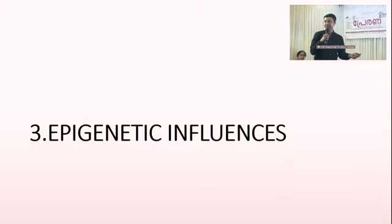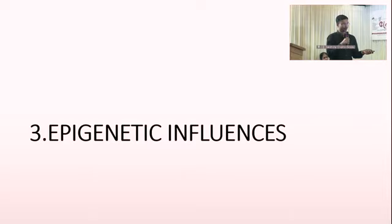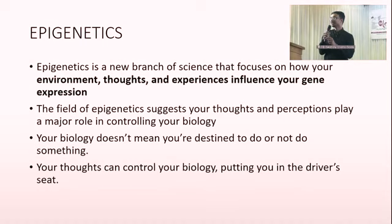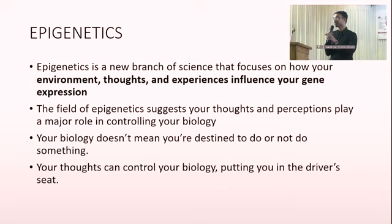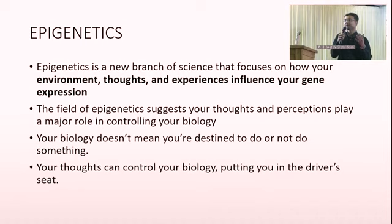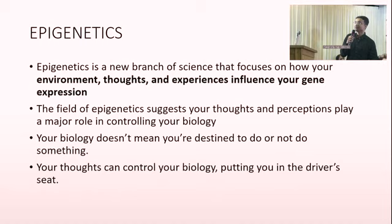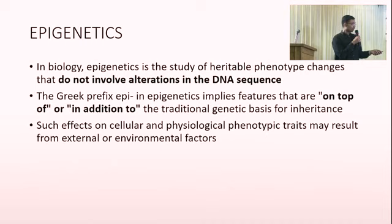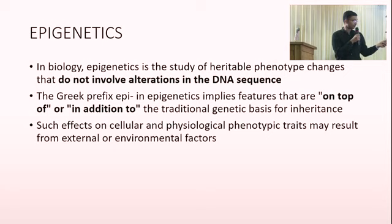There is an important field called epigenetics, which is becoming very important today. Epigenetics is a new branch of science that basically focuses on how your environment, your thoughts and your experiences affect your expression of genes. Previously it was taught that 46 chromosomes determine all your characteristics including your behavior and appearance. This is proven to be not entirely true. Epigenetics basically means that your environmental influences and your thoughts can play a role in shaping your future. Epigenetic changes alter your phenotype without actually changing your DNA — your genetic code remains the same, but the expression of it varies.